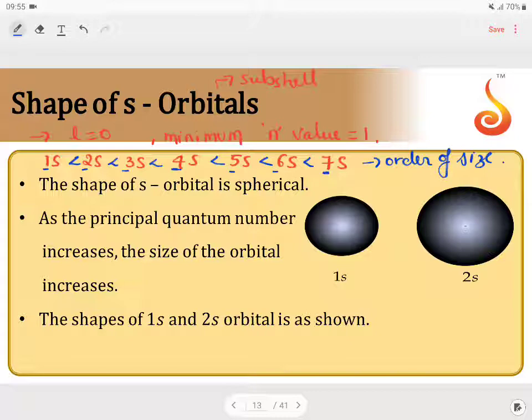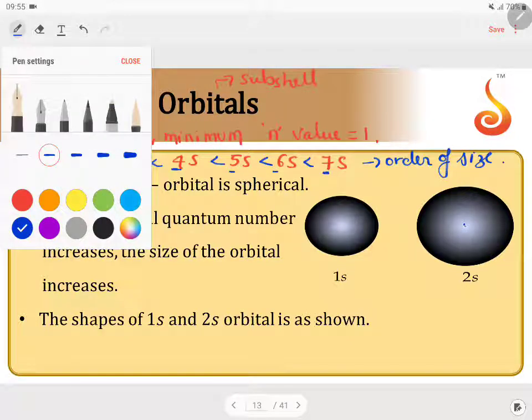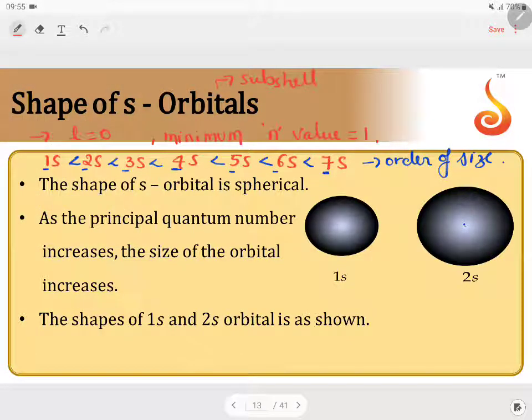And if you consider S subshell or S orbital, it is spherically symmetrical. Because when you take the nucleus, nucleus is at origin. You know that this is the origin.